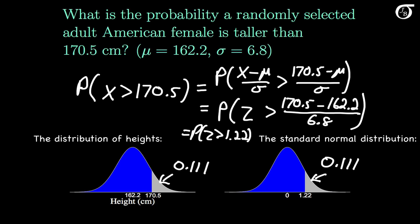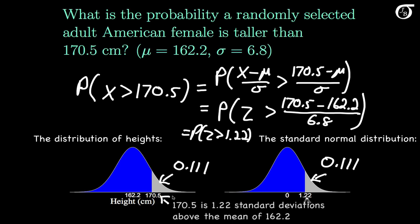The Z value tells us how many standard deviations a value is above or below its mean. So this Z value of 1.22 means that 170.5 is 1.22 standard deviations above the mean of 162.2. We just figured out the probability that a normally distributed random variable falls more than 1.22 standard deviations above its mean.